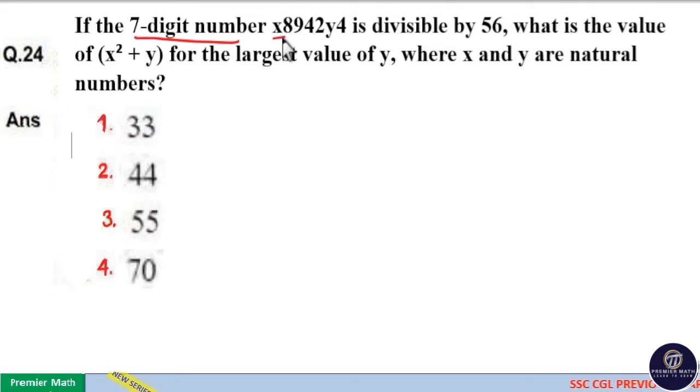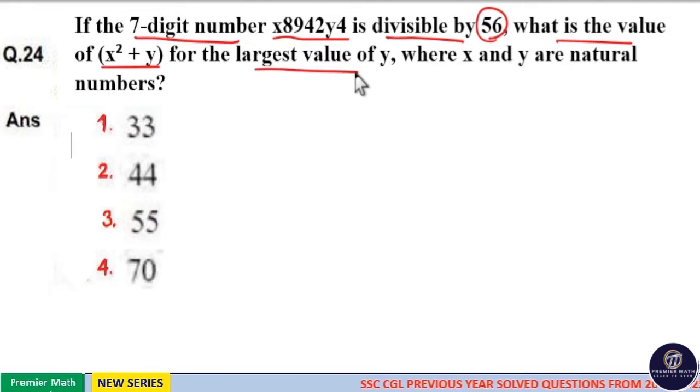If the 7 digit number x8942y4 is divisible by 56, what is the value of x squared plus y for the largest value of y, where x and y are natural numbers?